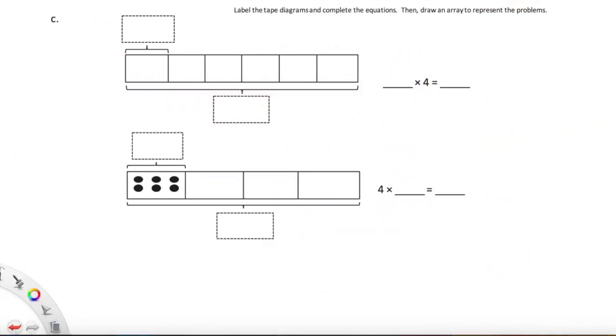So here is an awesome problem where we really get to dive deeper into this fabulous commutative property. For this piece, we are instructed to label the tape diagrams. Keep in mind, tape diagrams are just a fancy name for a rectangle chopped up into equal bits, and complete the equations. Then draw an array to represent the problems. So this is a lot, but we can handle it because we can do hard things.